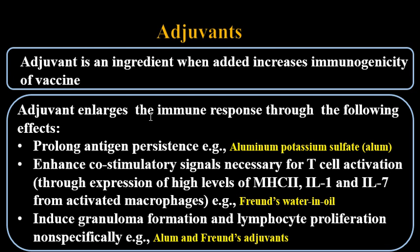An adjuvant is an ingredient or a substance that, when added, increases the immunogenicity of a vaccine. That is to say, an adjuvant enlarges or augments the immune response through the following effects.